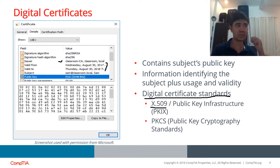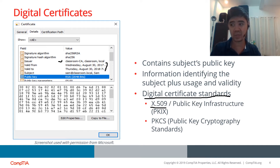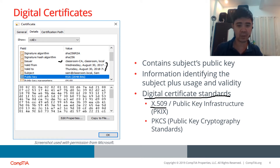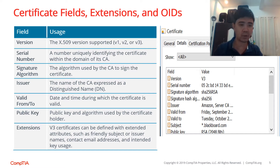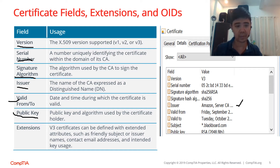Standards like X.509 ensure that, for example, a Linux web server and a Windows client can work together. Aside from X.509, there is also a standard called Public Key Cryptography Standards. Useful content inside the digital certificate includes the version, serial number, digital signature, the algorithm used by the CA to sign the certificate, the issuer name, the validity period, the public key, and extensions. For example, the certificate authority here is Amazon.